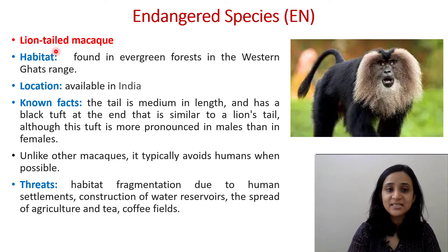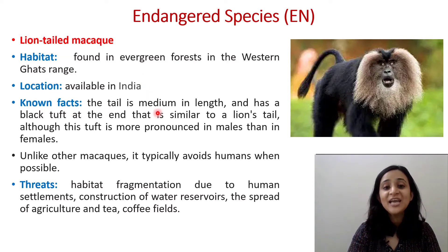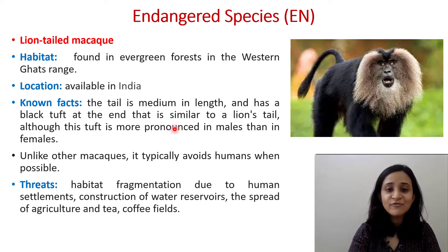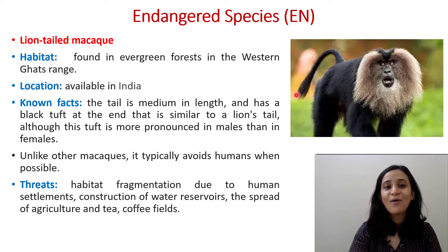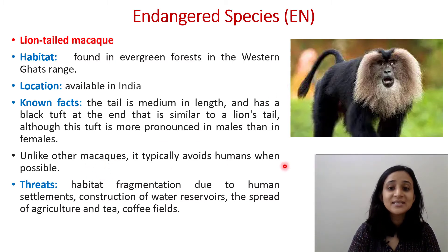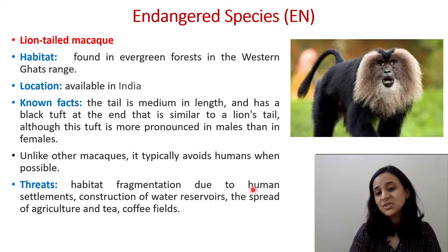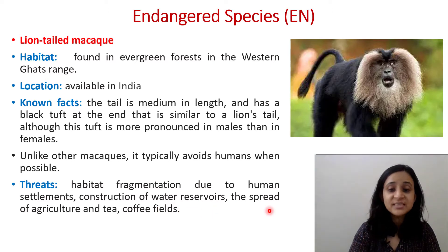Next is the Lion-tailed Macaque, also under Endangered. Its habitat is evergreen forests in the Western Ghats range, located in India. The tail is medium in length and has a black tuft at the end similar to a lion's tail, more pronounced in males than females. Unlike other macaques, it typically avoids humans when possible. Threats include habitat fragmentation due to human settlements, construction of water reservoirs, and spread of agriculture and tea and coffee fields.